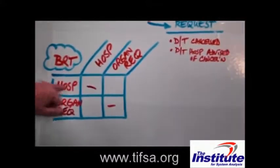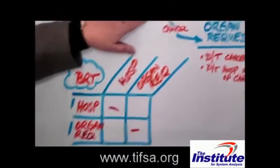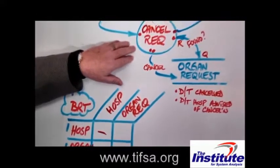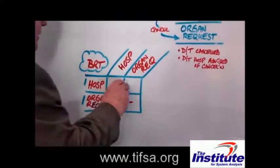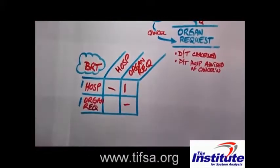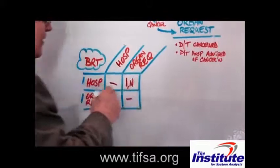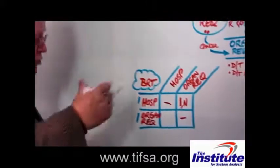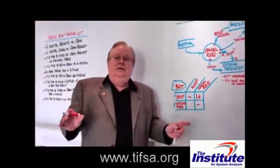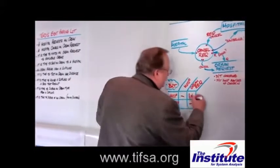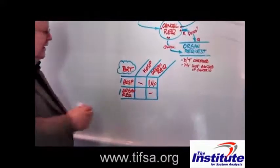For a single specific hospital, how many organ requests might that hospital cancel? Could they cancel one? Sure. Could they cancel several over time? Sure they could. So we'll put an N in there for several, for numerous. Is it possible that a hospital never cancels a request? Sure, it's possible. I'm going to put a zero — meaning never — in there.